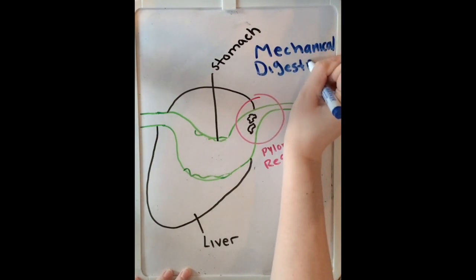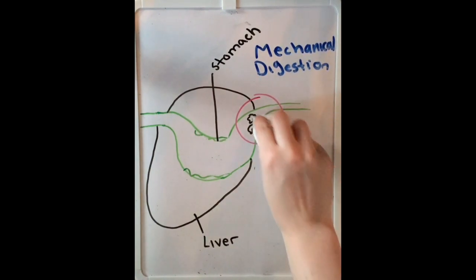As you can see, the pyloric region is circled in pink. The stomach contents are mixed thoroughly and pushed towards the intestines.